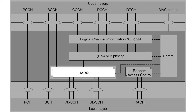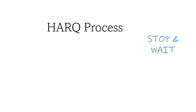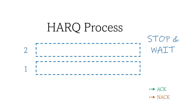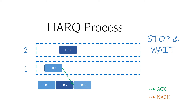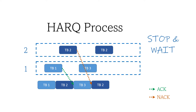This is where HARQ sits in the MAC structure. HARQ is a stop-and-wait protocol with multiple processes. In each process it waits until it gets an ACK to send a new transmission, or a NACK for a retransmission. 5G supports up to 16 HARQ processes and it is configurable; if not set, it is assumed to be 8.